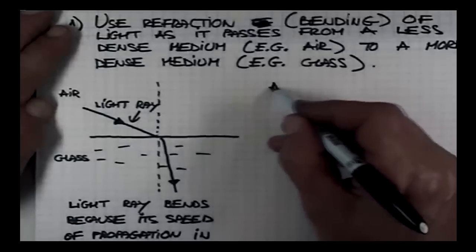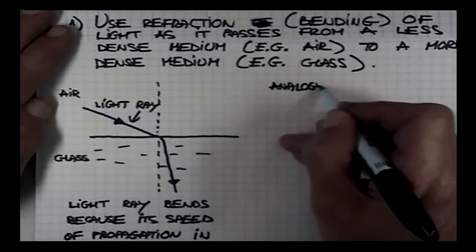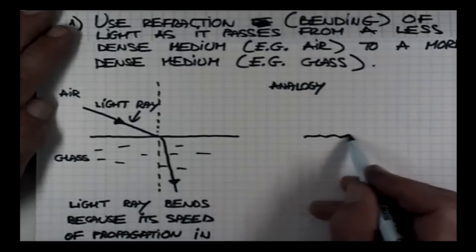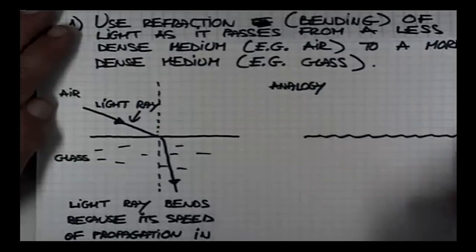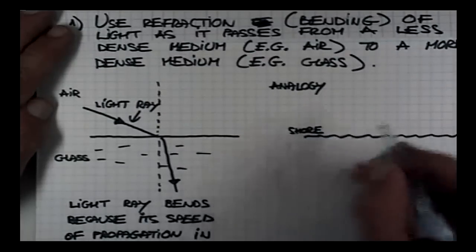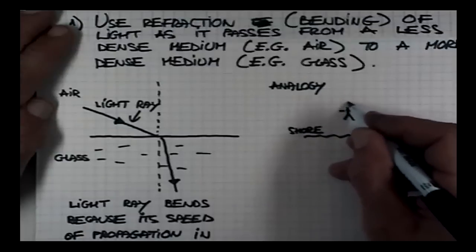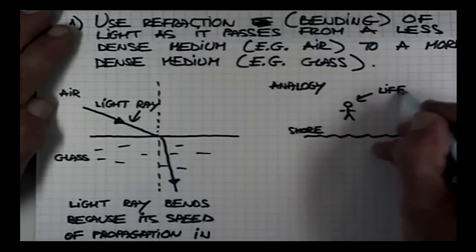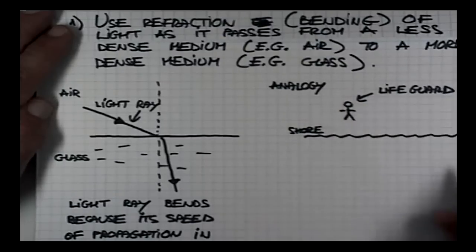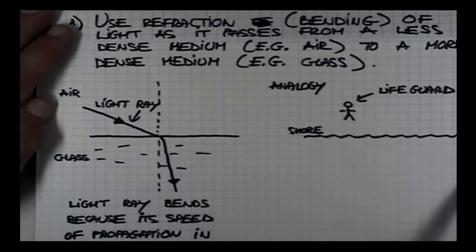You can understand this through an analogy. Suppose that you work as a lifeguard, and here is the shore, and here is the lifeguard. Then there is a person in water who is in trouble, who is screaming help. You want to reach the person who is drowning or is in trouble in the shortest possible time. That is your goal. That should be your strategy, to get to this person in the shortest possible time.